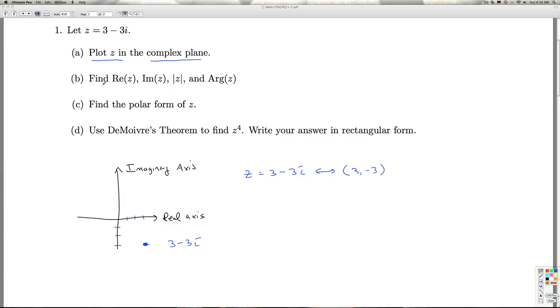In part B we're asked to find the real part of Z, the imaginary part of Z, the modulus of Z, and the argument of Z. So if you rewrite Z in the form a plus bi, it's 3 plus negative 3i. The real part of Z is a, and the imaginary part of Z is b. So in this case, the real part of Z is 3, and the imaginary part of Z, the coefficient of i, is negative 3.